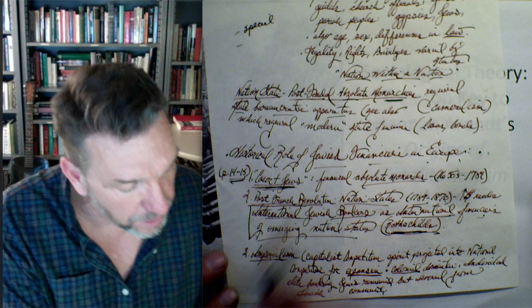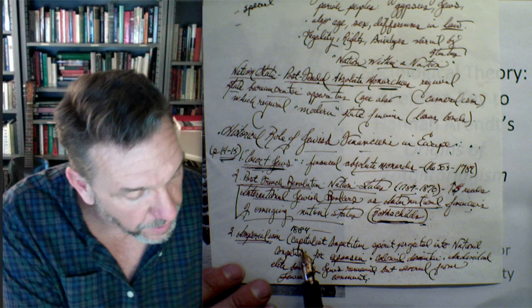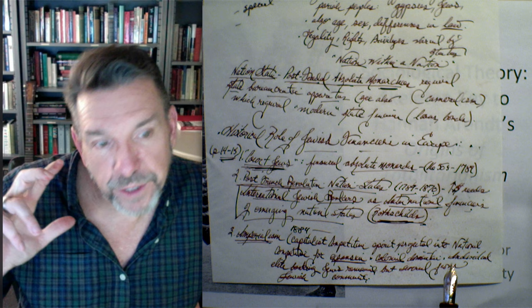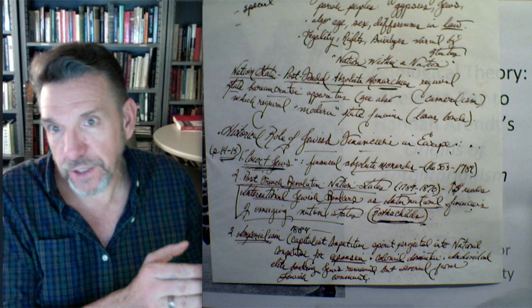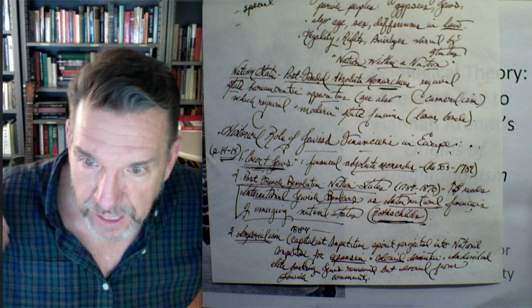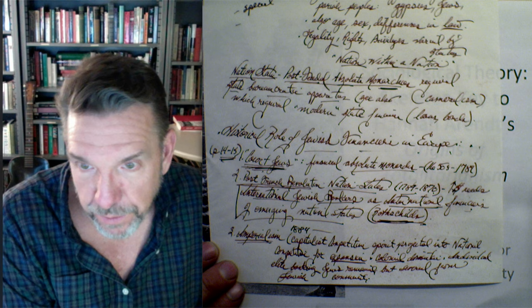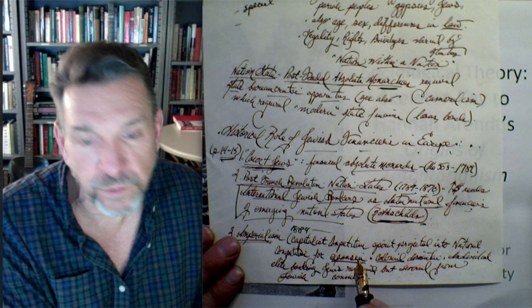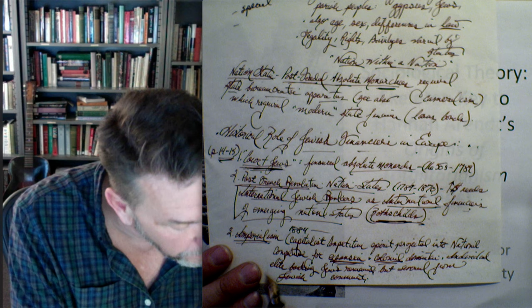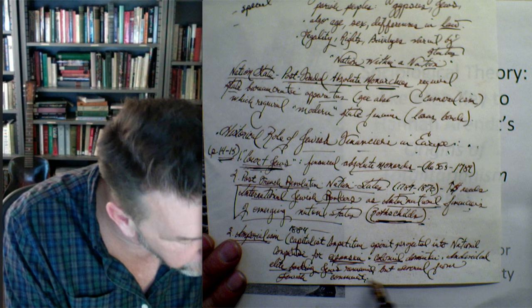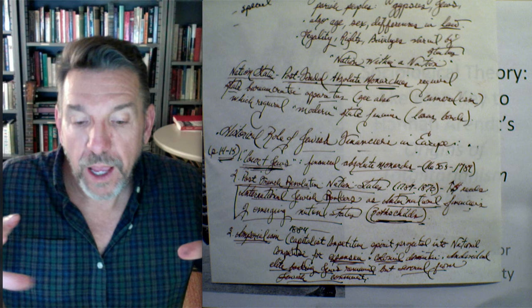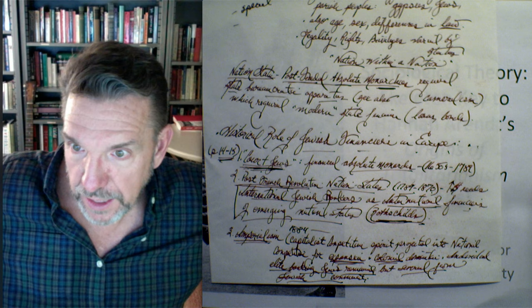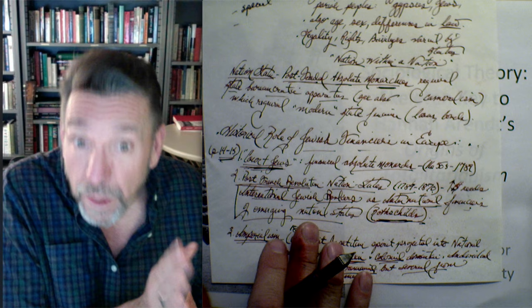Phase three: by the age of imperialism — roughly 1884 onward — the spirit of capitalist competition is projected into the nation state itself, and nations become competitors against each other for expansion. Individual elite Jewish banking firms and families remain, but become increasingly severed from the everyday Jewish community. These few elites become essentially assimilated into elite aristocratic society — the remnants of it in the 19th century.